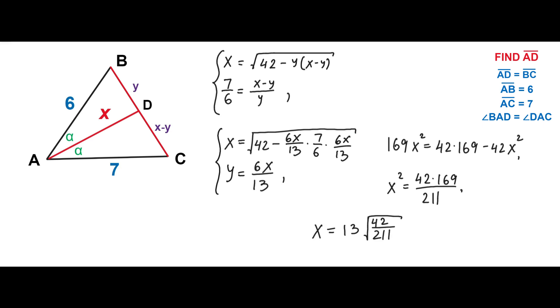Solving this system for X we've got the length of the angle bisector AD. So the length of the angle bisector AD is equal to 13 times square root 42 divided by 211 which is approximately 5.8.